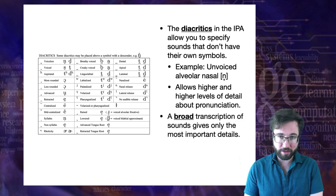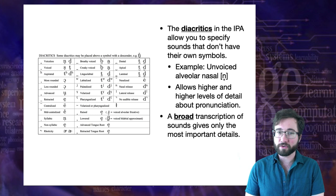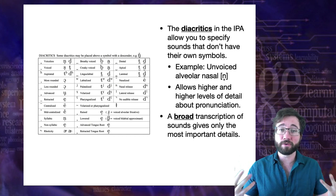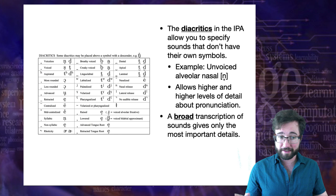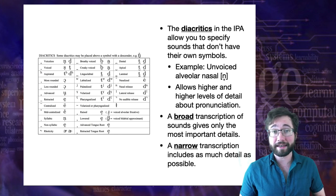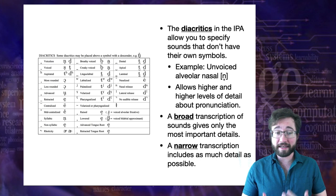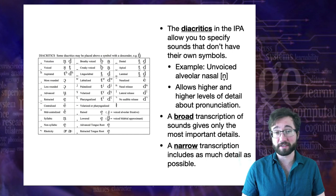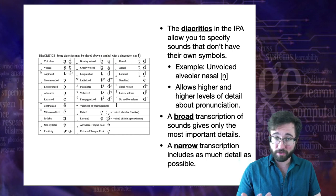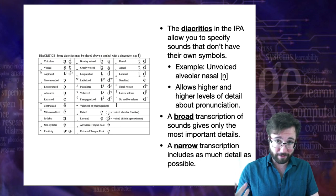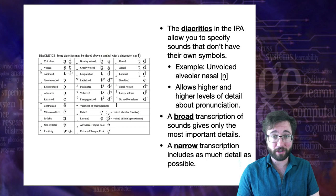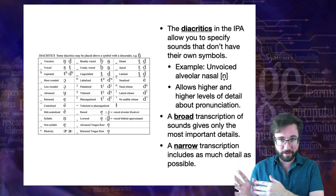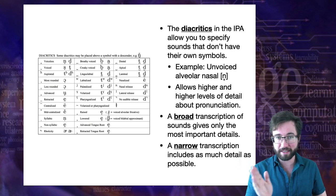A broad transcription gives only the most important details about sounds — using IPA symbols with only a few diacritics. A narrow transcription includes as much detail as humanly possible, every little phonetic aspect of what someone is saying. We'll actually be doing narrow transcriptions later when we get to phonology. Right now everything I've shown is broad transcription, but this is a spectrum — from most broad to most narrow, with anything you actually do somewhere in between.